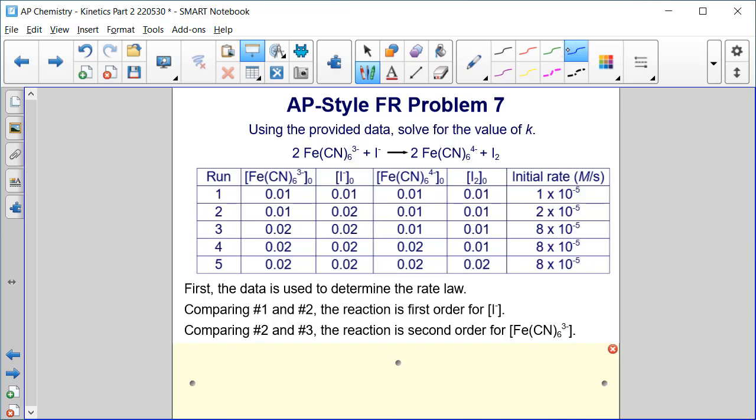Now let's look at runs three and four. Everything is constant except Fe(CN)6^4-. If we double it, there's no change in the rate, so that's zero order.